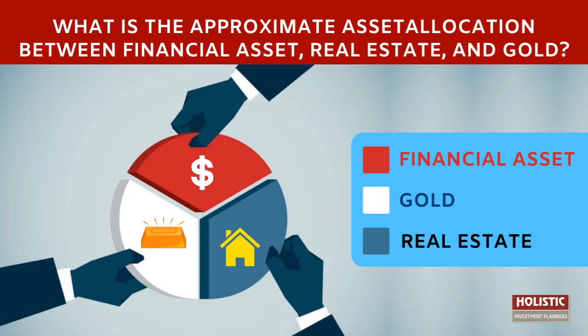This is broadly how asset allocation is done, but on a case-to-case basis, your goals could also be different. A three-year horizon versus a ten-year horizon will change the asset allocation. That is best done by financial planners who can analyze your needs, your tenure, your goals, and then give you the right asset allocation.